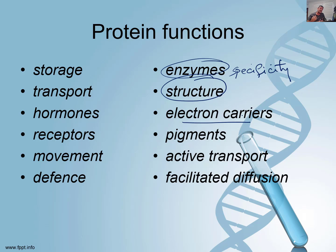We've seen proteins when we built the model of the cell membrane in Year 11 — we saw them as being part of the structure of that cell membrane, or used as channels to help with the movement of materials from the inside to the outside of the cell or vice versa. Proteins are also involved in pigment — hemoglobin, which carries oxygen around the body — nails and hair, all sorts of different things. We also know the specificity of proteins.